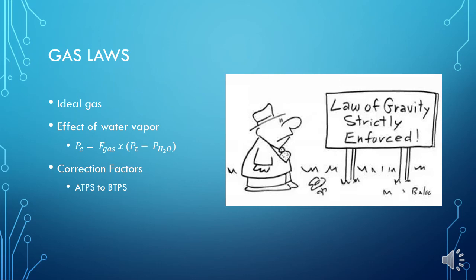In actual practice, though, you're going to have to account for the water vapor. We use that formula up there where Pc is the corrected gas pressure. F is the fractional concentration. Then we have the water vapor pressure formula here on the right, and that gets taken out. In clinical practice, you're always going to have water vapor present. So you need to calculate it first. The first one we have is the ambient temperature pressure, saturated to body temperature, and pressure saturated. So we have the ATPS and the BTPS, which you might see somewhere.